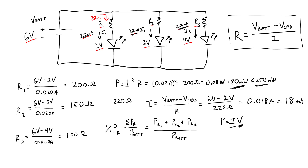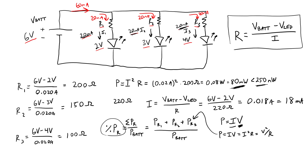Remember that voltages are the same in parallel, but currents add in parallel. In this case, 20 milliamps flows down each of the three branches separately, adding up to a total of 60 milliamps drawn from the battery. That is one disadvantage of LEDs in parallel — you draw three times more current than if the LEDs were in series, where all would share 20 milliamps. This drains your battery faster. For the resistors, you can use P equals IV, or equivalently P equals I squared R or P equals V squared over R, depending on which variables you know.